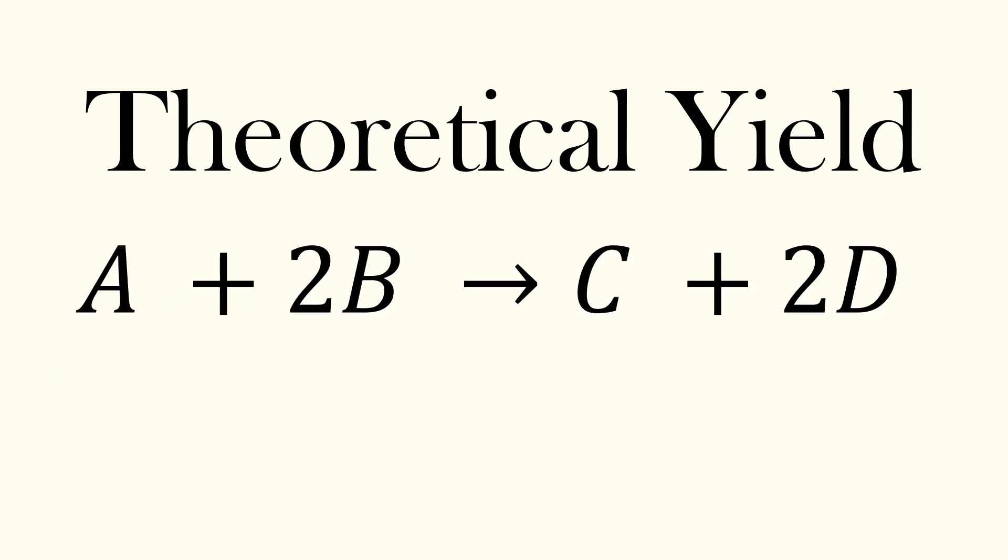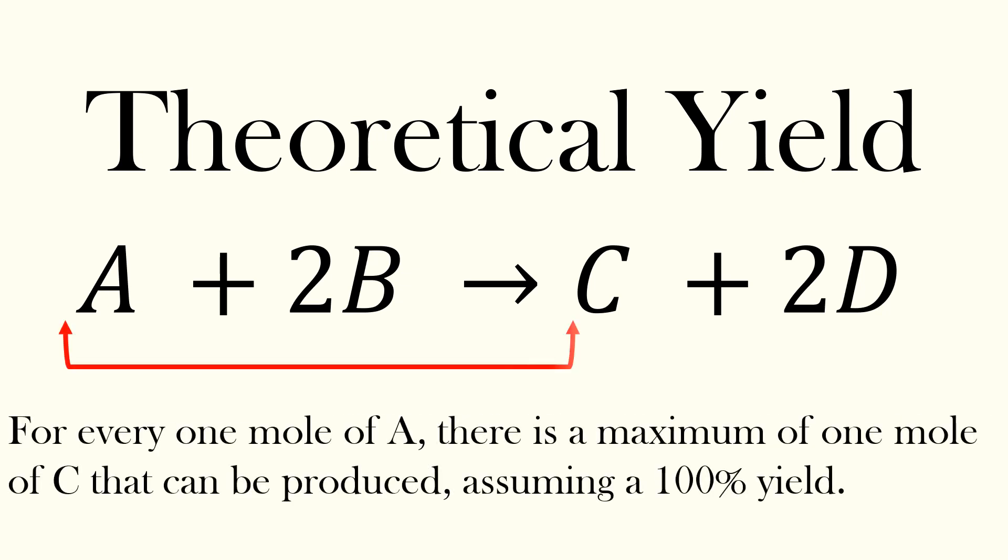Take this balanced equation for example. For every one mole of A, there's a maximum of one mole of C that can be produced, assuming a 100% yield. This means that all the reactant, 100%, would be converted to product.